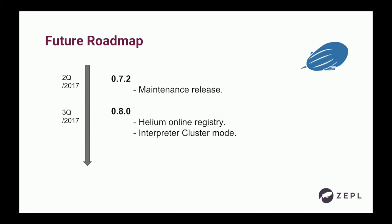Eventually we want to reach 1.0, hopefully not too late this year. Before 1.0, we want to include the Helium online registry — the Helium menu with install and uninstall — which is not included in 0.7.2 but will be in 0.8. Also, interpreter cluster mode is another big plan: right now all interpreters run on your local machine, which is not scalable for many users on a single Zeppelin instance. We are working on running interpreters in a remote cluster, like a YARN cluster or Kubernetes cluster. After that, we'll focus on maturity and stability to reach 1.0.